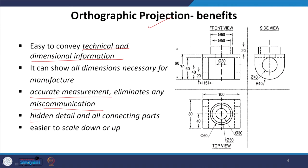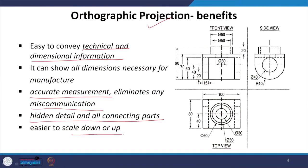In orthographic projection, if we measure a dimension once, we do not need to repeat it. That is where the clarity of dimensioning lies, which is why it is such a popular system. We can derive hidden details and all the connecting parts, and it is much easier to scale down or up. For all these benefits, orthographic projection remains the most common and popular projection system in engineering and architecture.